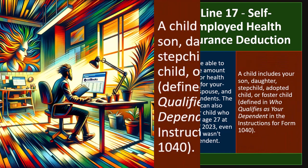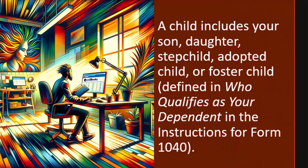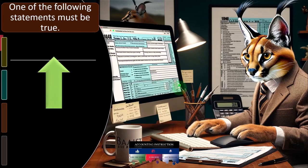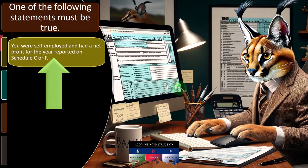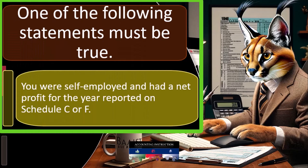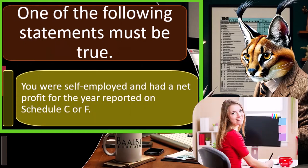A child includes your son, daughter, stepchild, adopted child, or foster child, as defined in who qualifies as your dependent in the instructions for Form 1040, which we looked at in a prior presentation. One of the following statements must be true: you were self-employed and had a net profit for the year reported on Schedule C or F.